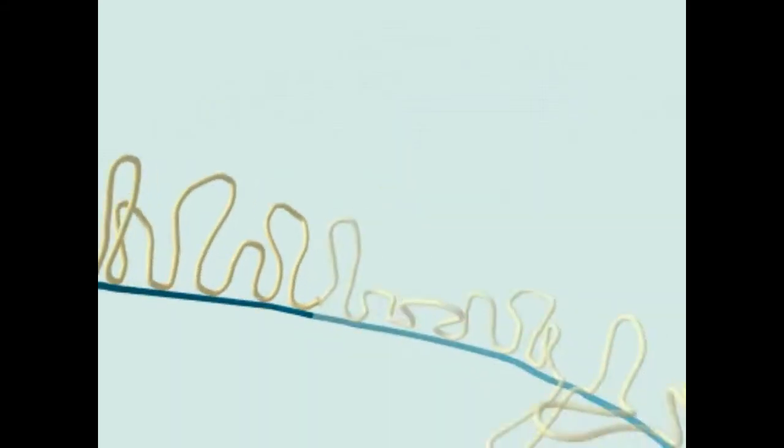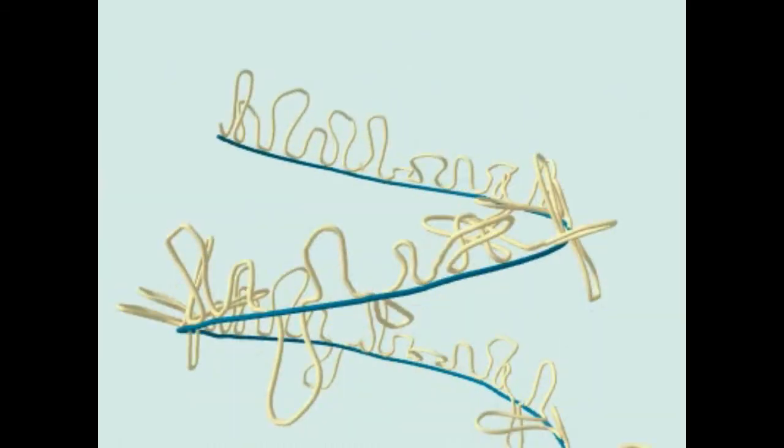The scaffold itself coils into a spiral to form the final chromosome structure.